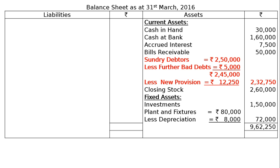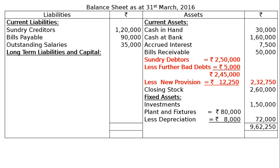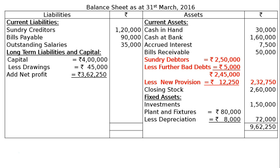On the liability side, current liabilities: sundry creditors Rs. 1,20,000; bills payable Rs. 90,000; outstanding salaries (adjustment written for the second time) Rs. 35,000. Under long-term liabilities and capital: capital Rs. 4,00,000, less drawings Rs. 45,000 (given on the debit side of the trial balance), add net profit Rs. 3,62,250 — final column Rs. 7,17,250. Total liabilities Rs. 9,62,250, which agrees with the asset side.